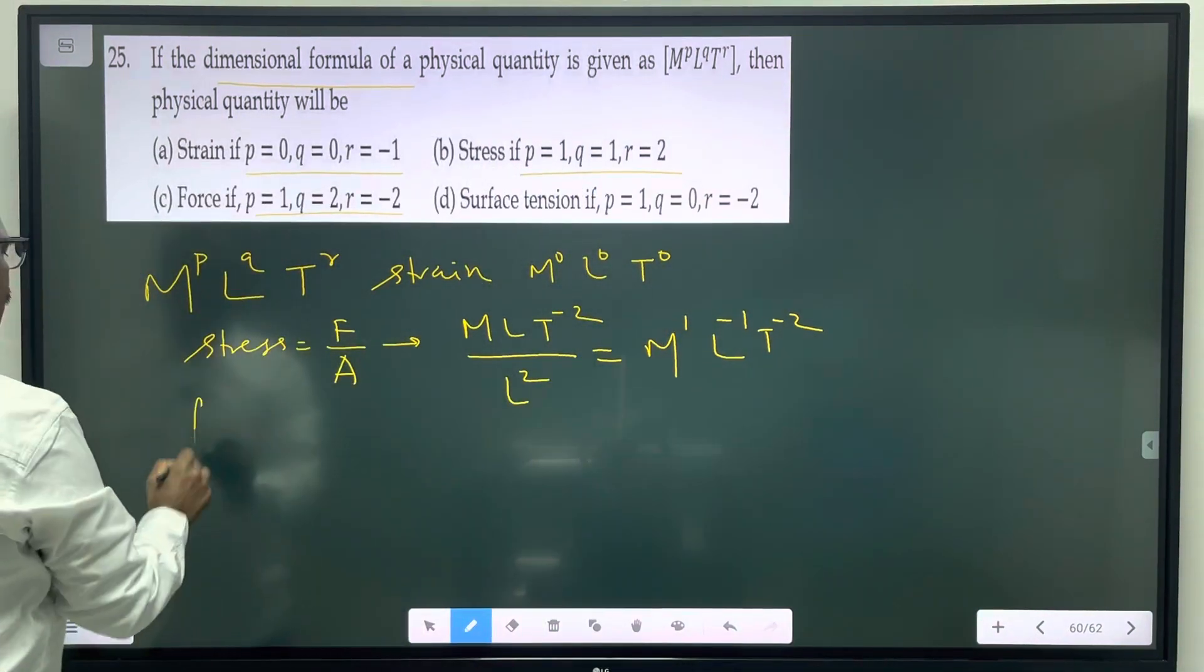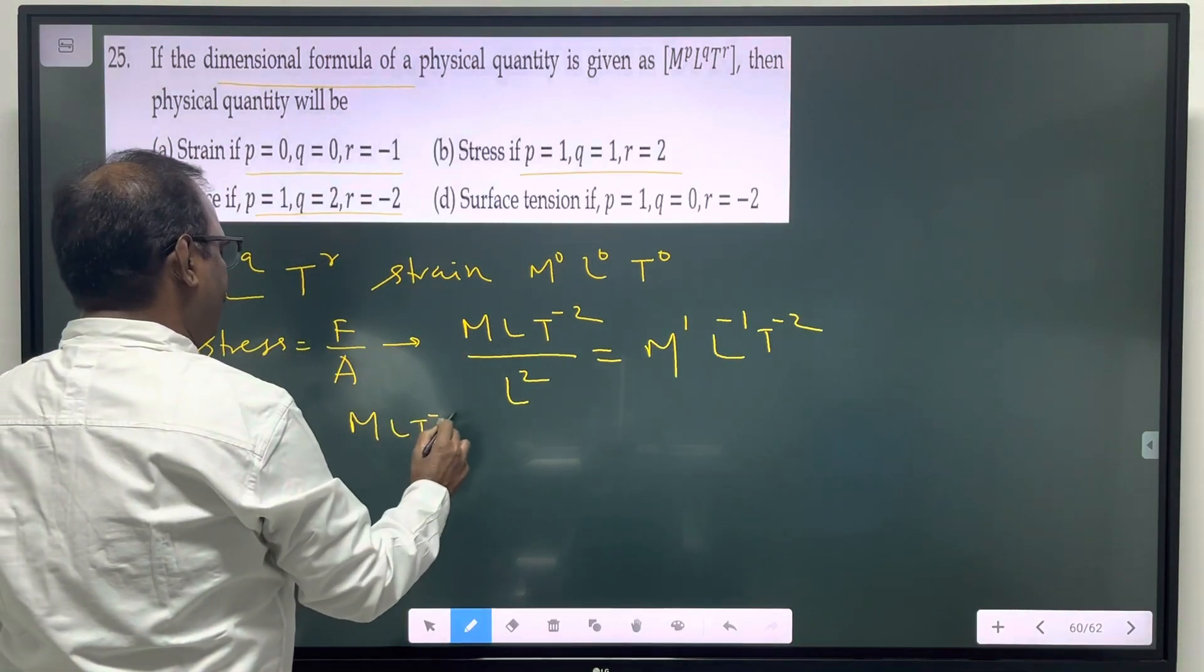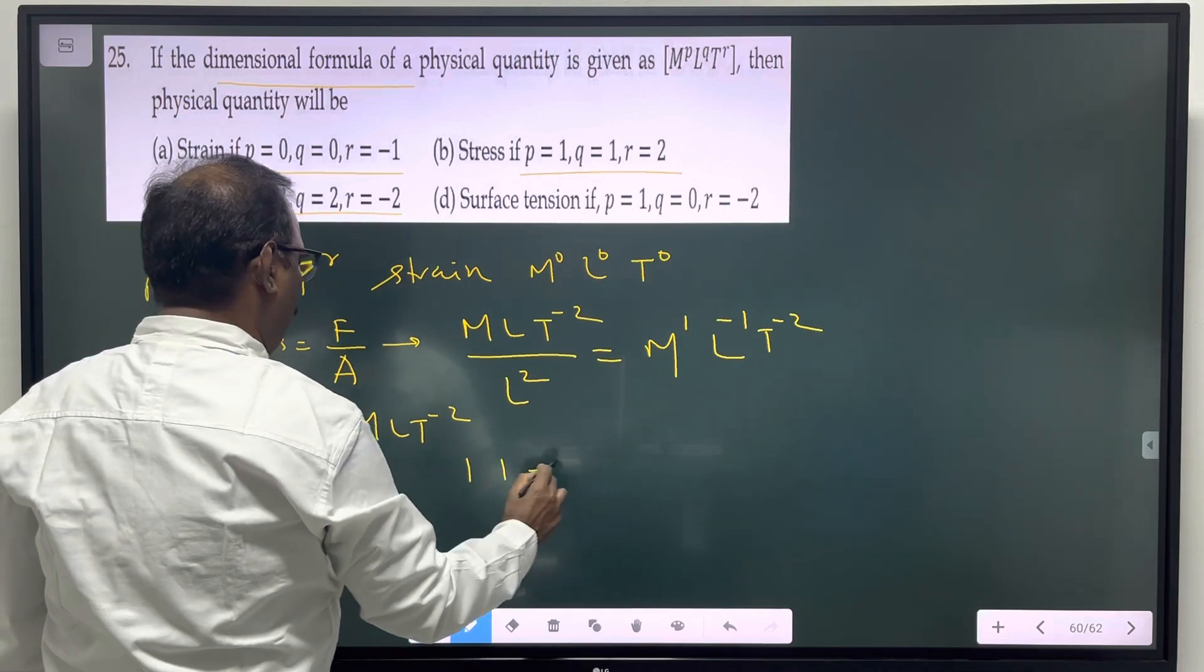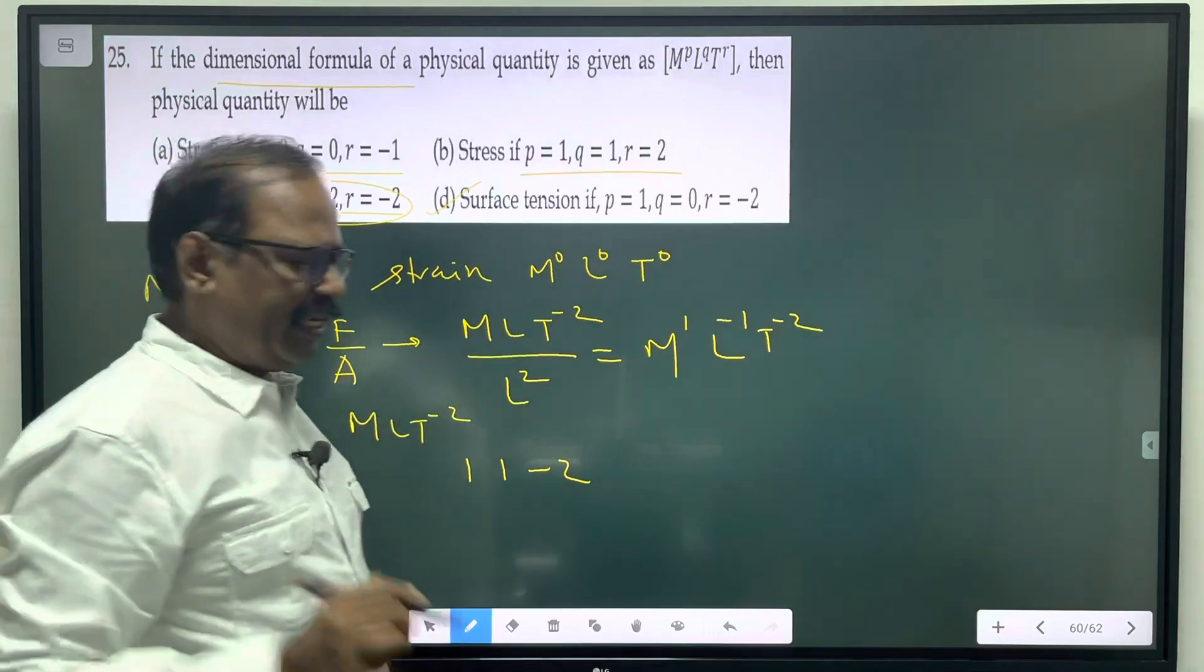So let me see. The third one is force. Force is not here. Here is M, L, T power minus 2. That is 1, 1, minus 2. Here is 1, 1, minus 2. That is not there. That is correct, let me check.